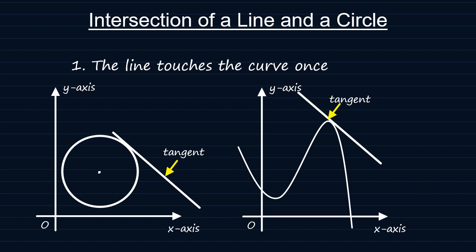In this case, you will get only one solution which gives us a single point of intersection. We can get this graphically or by solving the equation of the circle or curve and the equation of the line simultaneously.